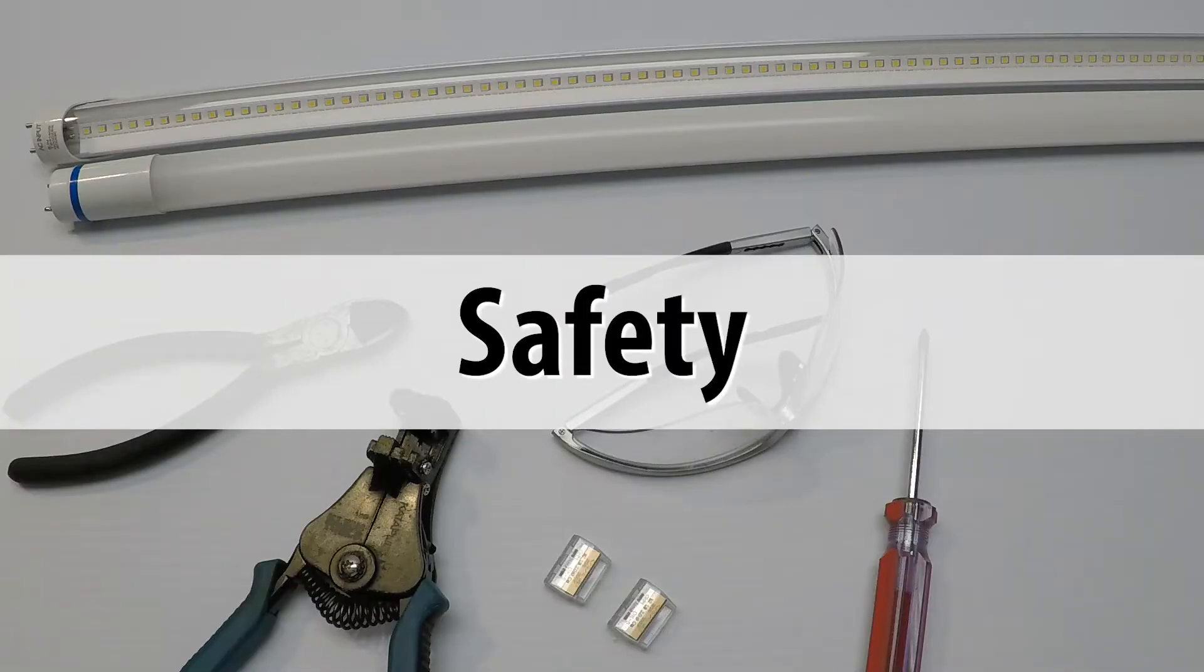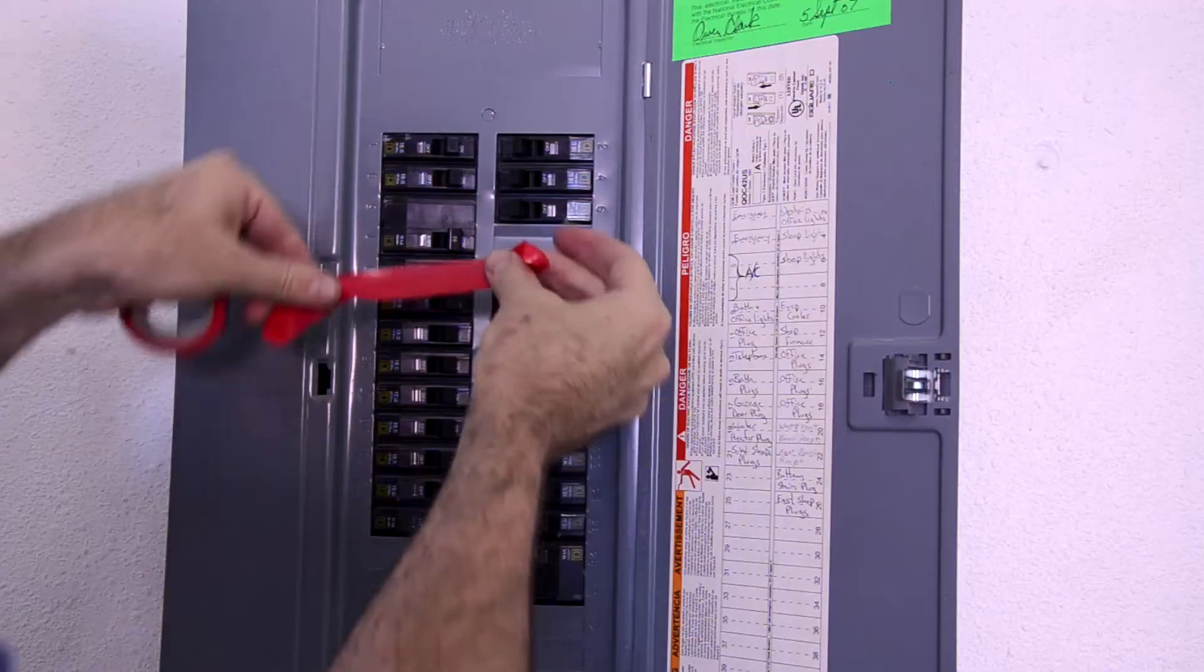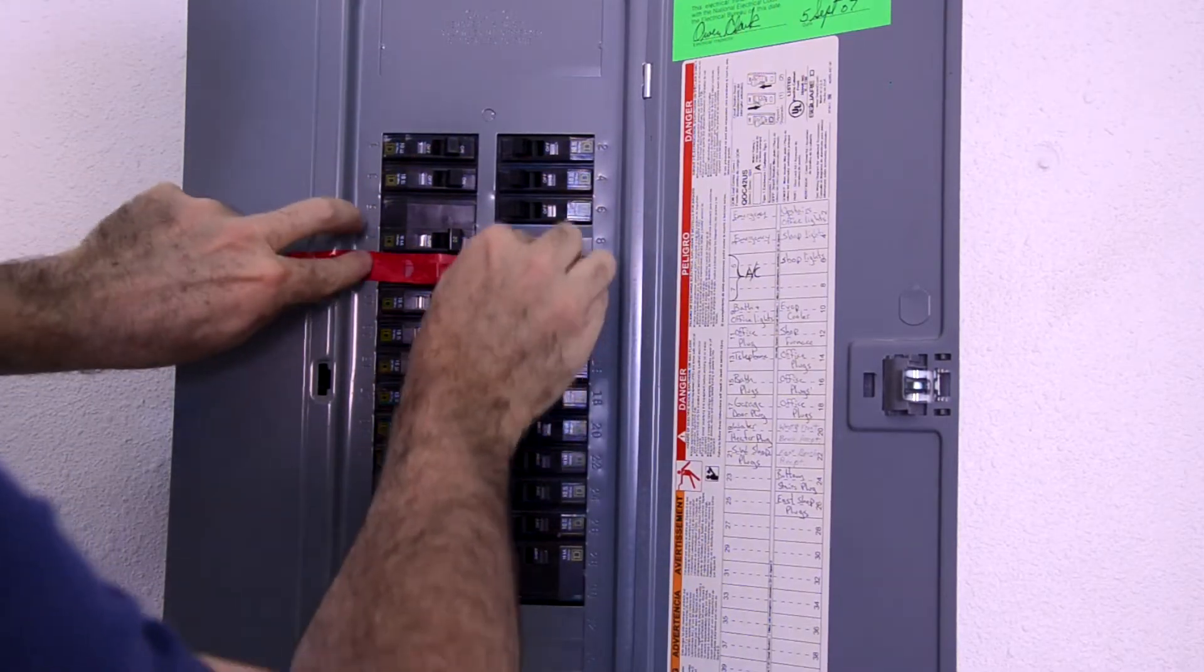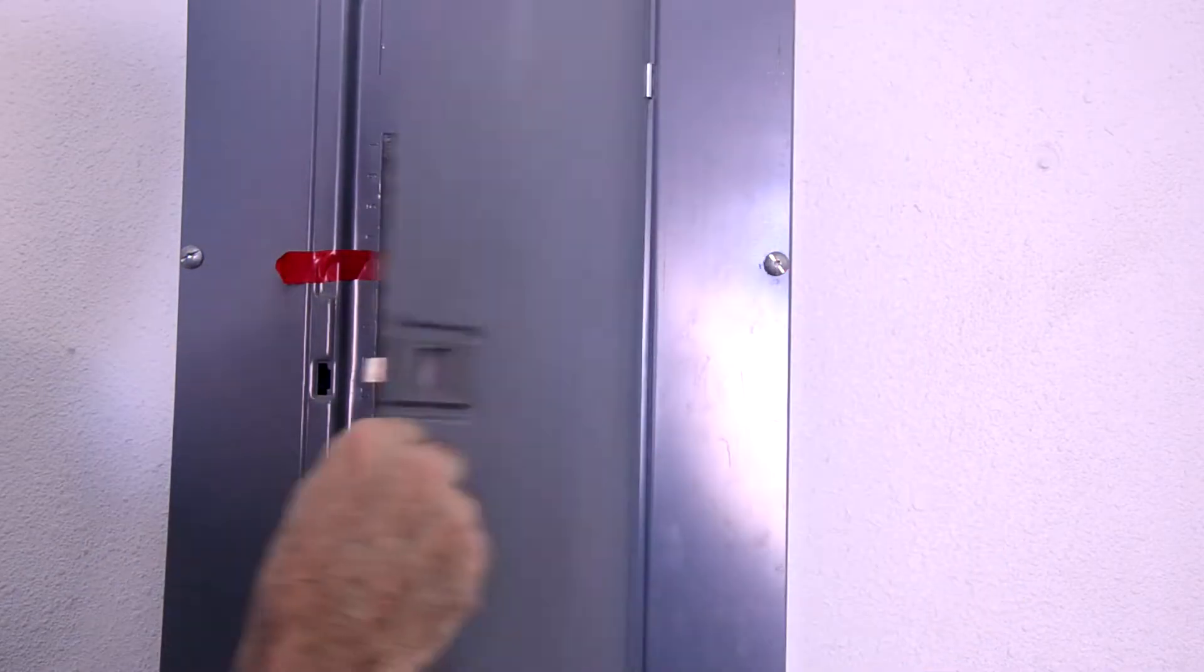Let's talk about safety first. Before you get started, shut off the circuit breaker that goes to your lighting circuit. If you cannot lock the breaker cabinet, put some red tape across the circuit breaker. In a commercial setting, use a lockout device on the breaker so it cannot be turned on while you're working.